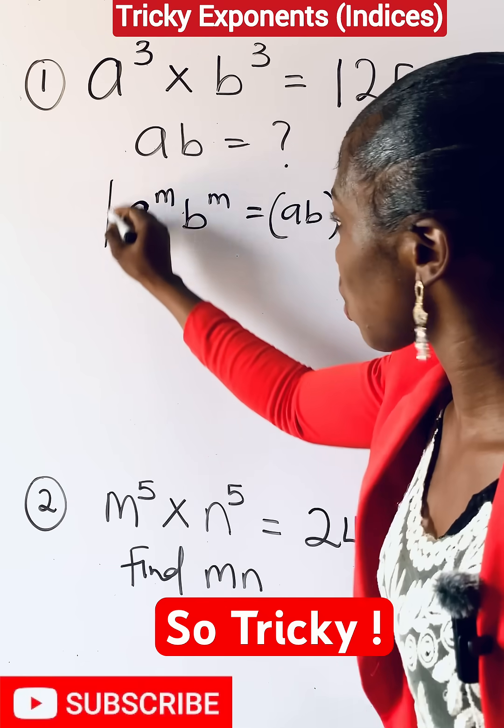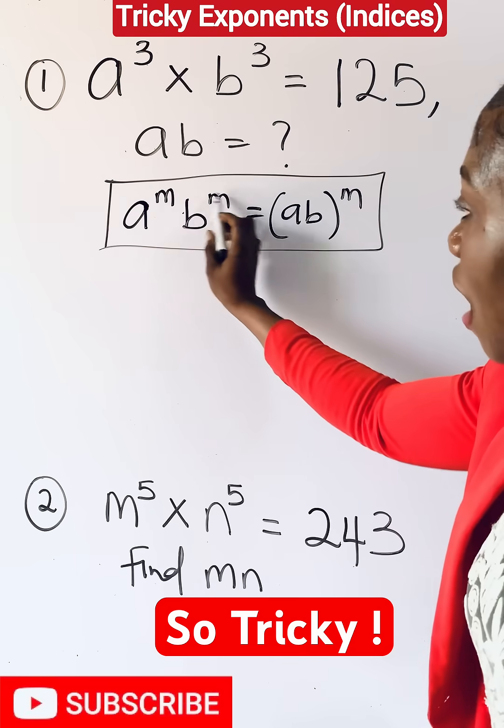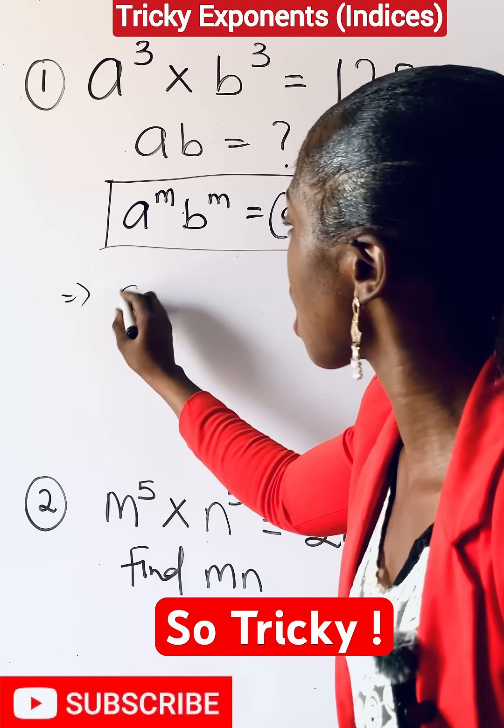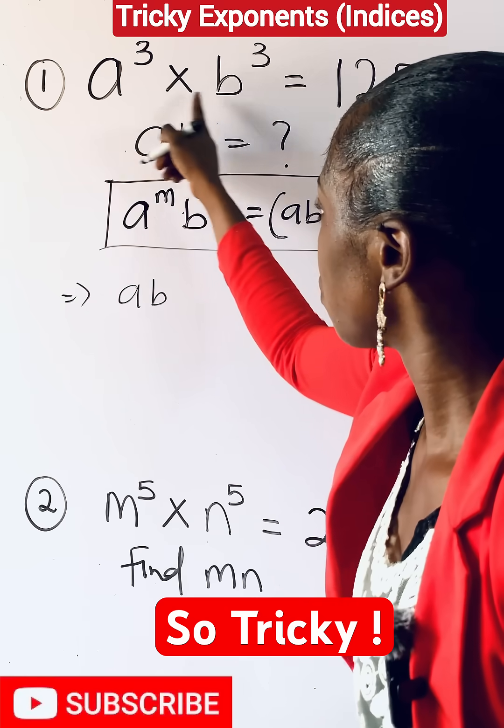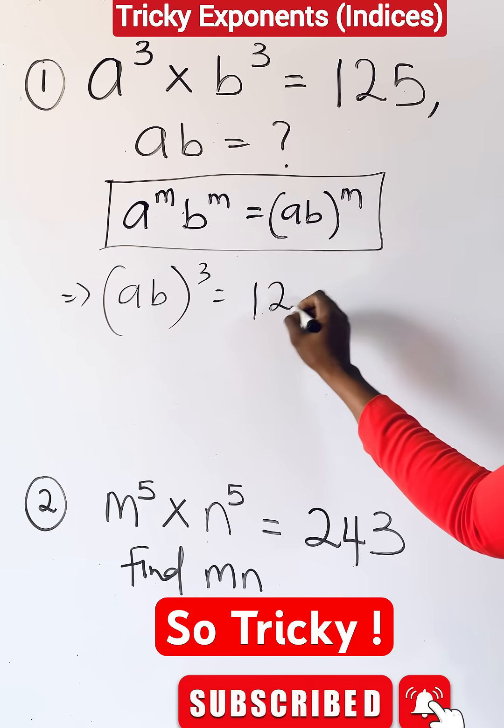So this is always a guide. Now when you have this, you observe that the powers are the same, just like what you have here. So it's going to give us ab will be raised to this power of three and is equal to 125.